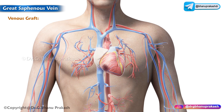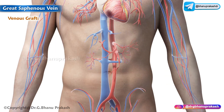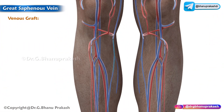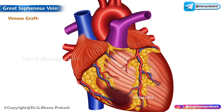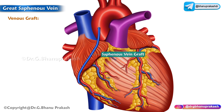Another important clinical use is vein grafting in coronary artery bypass surgery. To relieve ischemia of the myocardium, a segment of the great saphenous vein is sectioned and used for coronary grafting, especially to bypass arterial obstruction. Due to the presence of valves, the vein has to be reversed so that its valves do not obstruct the blood flow. This is what we need to know about the long saphenous vein.